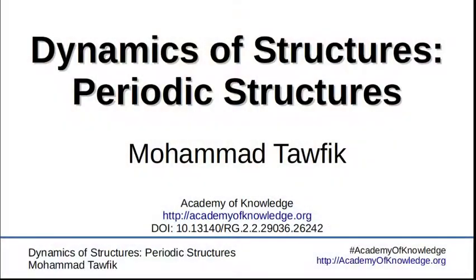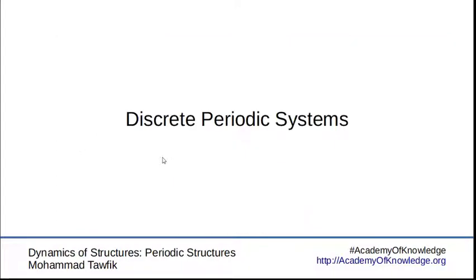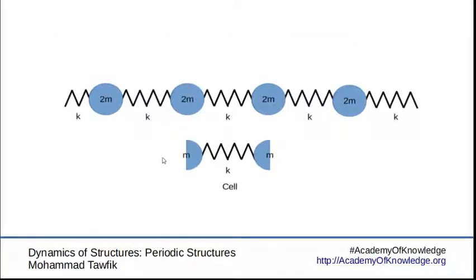Here, we will start by this simple periodic system. The masses and springs are identical. All the masses have values that are equal to 2m. The springs are all of stiffness k. So this is an identical cell that is repeated.